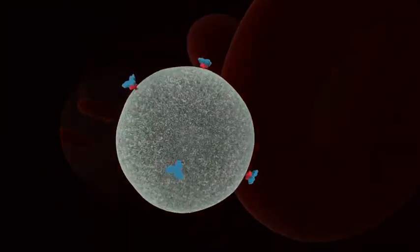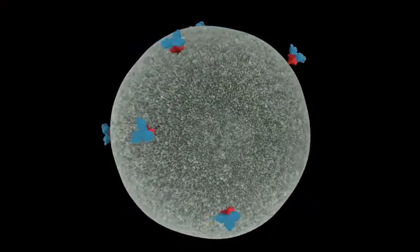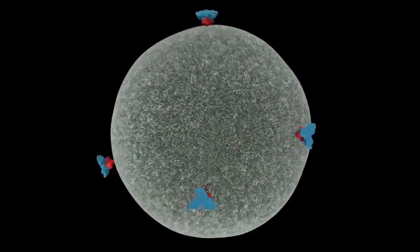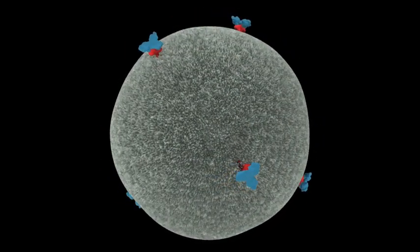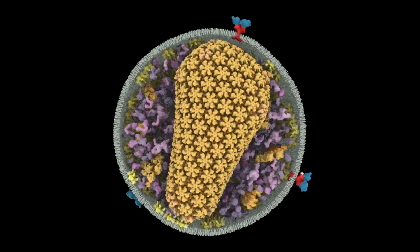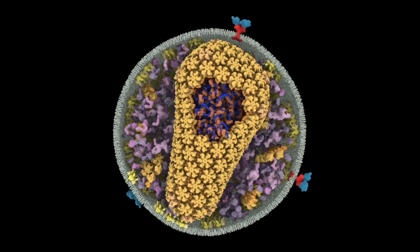HIV first enters the body through the bloodstream. The viral particle is surrounded by a membrane that's studded with viral proteins known as envelope proteins. In this cross-section, the conical-shaped capsid, shown in orange, houses the RNA genome, shown in blue. Accessory proteins are shown in purple.